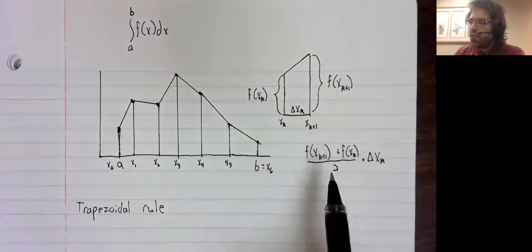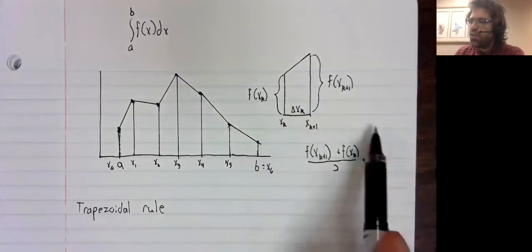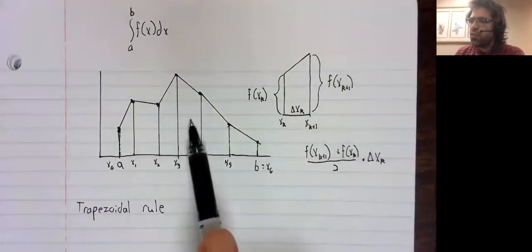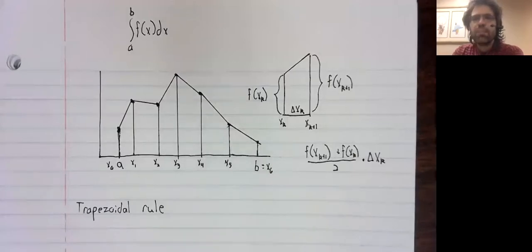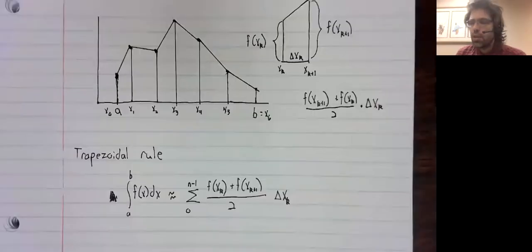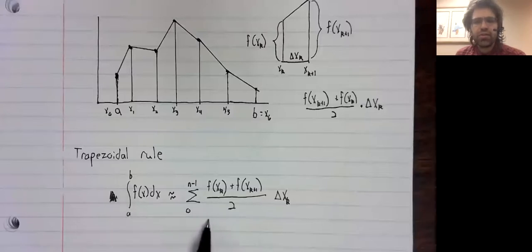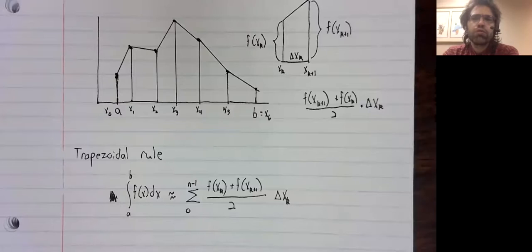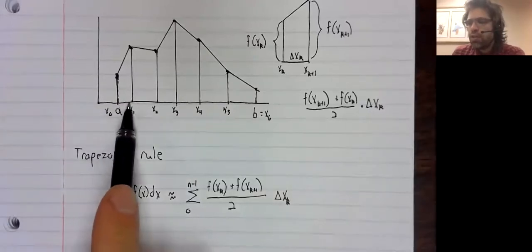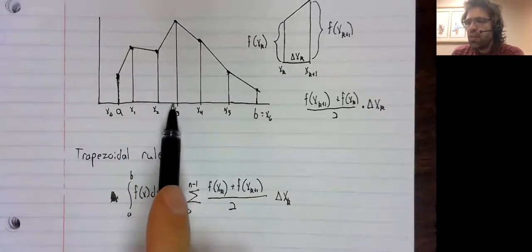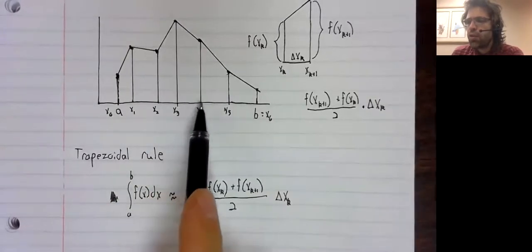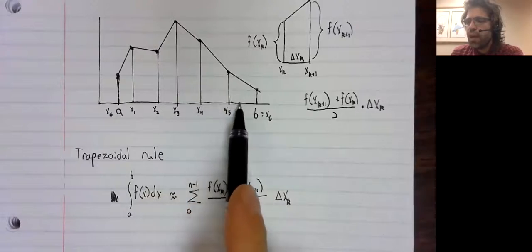And if we take all of these areas of trapezoids and add them together, we get to this. The trapezoid rule works whether or not these intervals are the same length or not.